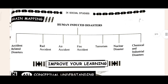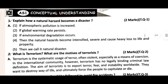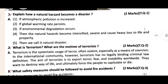After the keywords, there is a brain mapping section — it is a very small brain mapping. If you want, just write it; otherwise you can leave it. Once that is complete, come to 'Improve Your Learning.' The first question is: 'How does a natural event become a disaster?' That is your first question and answer.